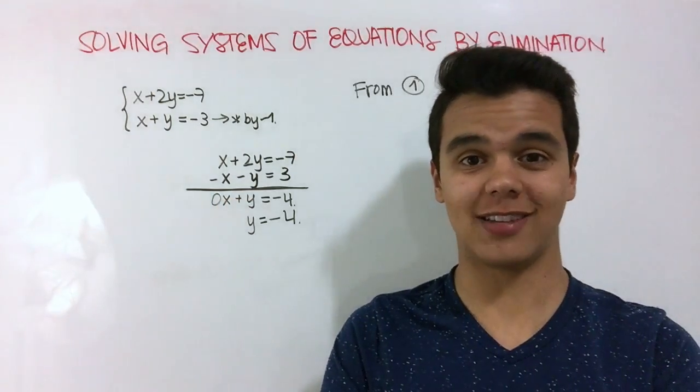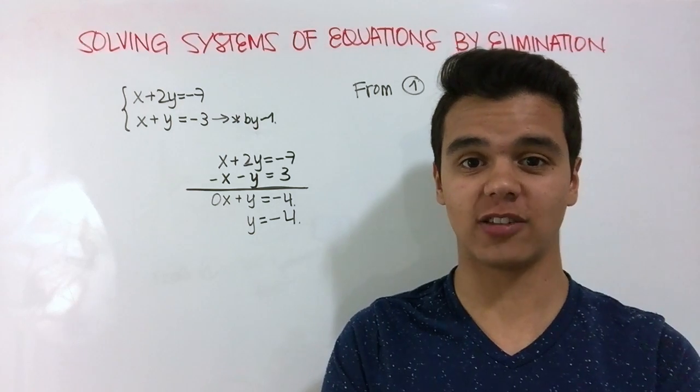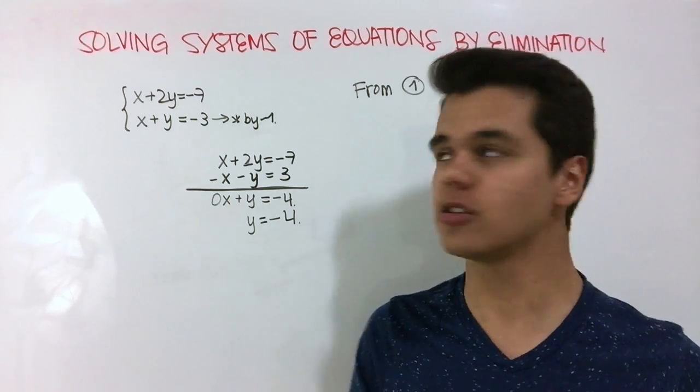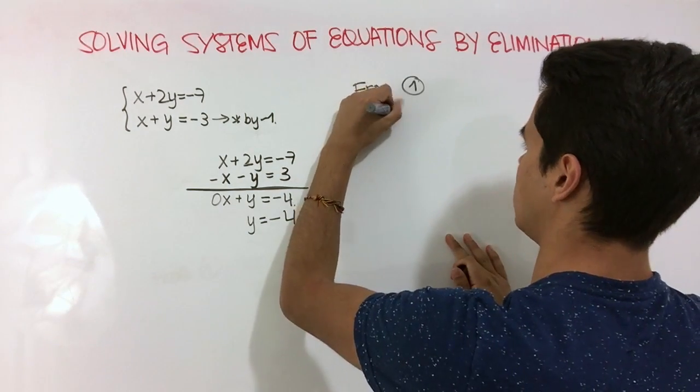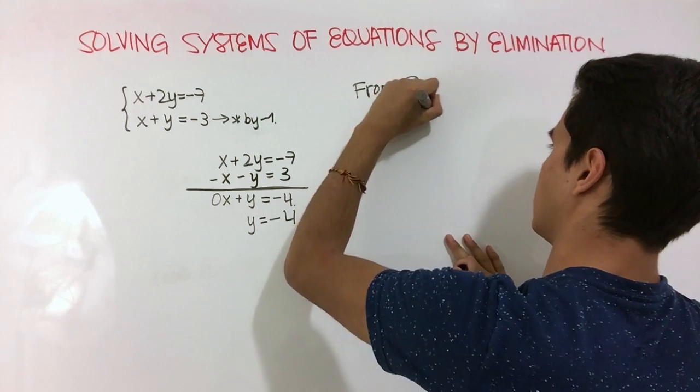Now that we know that y is equal to negative 4, we can just back substitute in either one of our equations. For example, from equation number 1 we know that x plus 2 times y is equal to negative 7.